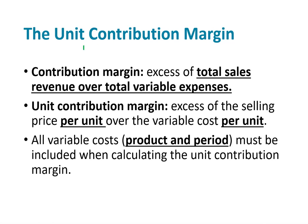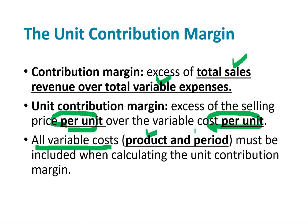A contribution margin is the excess of total sales revenue over total variable expenses. It can also be calculated on a per-unit basis as the selling price per unit minus the variable cost per unit. So sales minus variable expenses gives you your contribution margin — either in total or on a per-unit basis. When we talk about variable costs here, we mean all variable costs: both the product variable costs and the period variable costs.